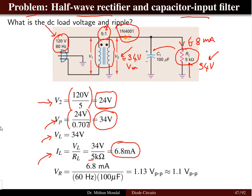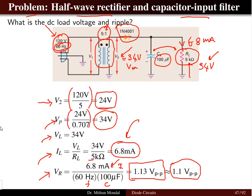The resistor and capacitor are in parallel, so they share the same voltage. The ripple voltage is calculated using the formula: current divided by frequency times capacitance. With a frequency of 60 Hz and a capacitor of 100 µF, and a current of 6.8 mA, the peak-to-peak ripple voltage is approximately 1.13 V, which we approximate as 1.1 V.